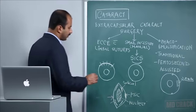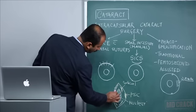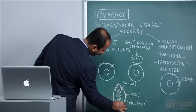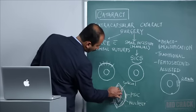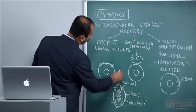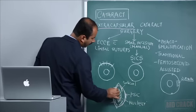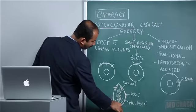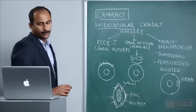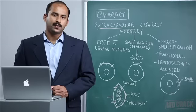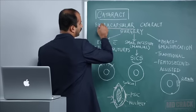The surgery essentially involves making an incision into the capsule, scooping out the entire contents by various methods, and leaving the capsular bag behind. Hence it is called extracapsular cataract extraction — extracapsular indicates not outside the capsule, but leaving the capsule behind and removing all other contents. This can be achieved by three techniques, all under the common heading of extracapsular surgery.